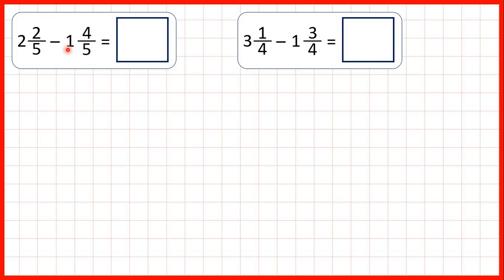When we're subtracting mixed numbers we see if we can subtract the fraction first. But here we start with just 2 fifths and we need to subtract 4 fifths. So we need to exchange one of our wholes for 5 more fifths. 1 less than 2 is 1, and that means we can add the denominator to the numerator. 5 plus 2 is 7, so 1 and 7 fifths is the same as 2 and 2 fifths.